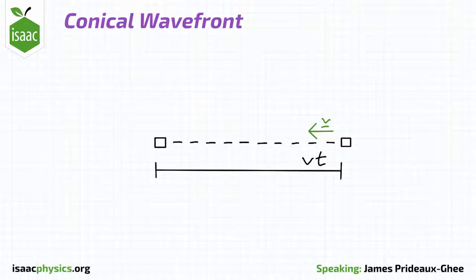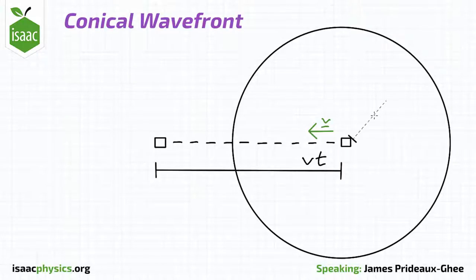So, after a time t, the wavefront of the sound emitted at time t equals zero will form a sphere, with a radius cst.